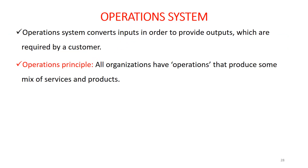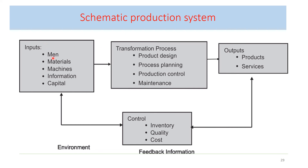This is the operation system. A system takes inputs — which can be materials, machines, information, and capital — and they are processed and transformed into outputs, either products or services. There is product design, process planning, production control, and maintenance as part of the control. We can take feedback from products and services to control our inventory, our quality, and our cost. This feedback information allows us to adjust our inputs based on what we get from the outputs.